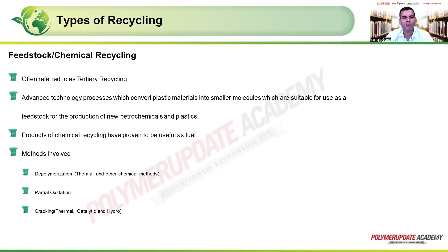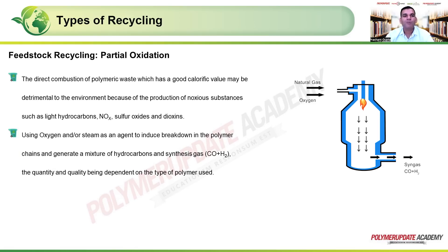The methods employed in chemical recycling include: first, depolymerization using thermal or other chemical methods; second, partial oxidation; and third, cracking — which can be thermal cracking, catalytic cracking, or hydrocracking.